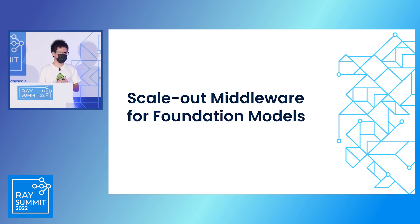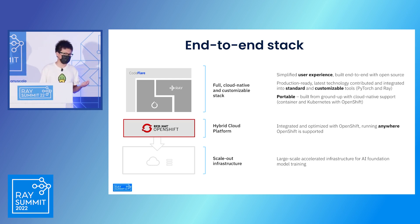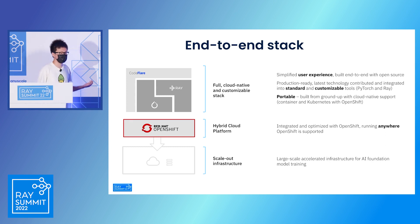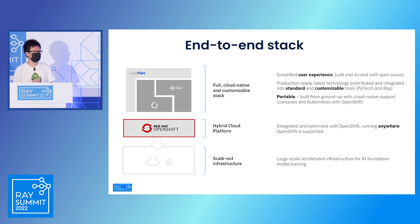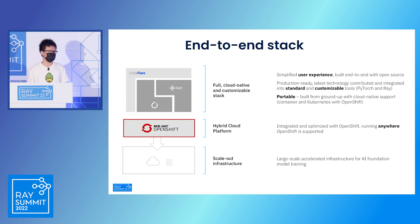One of the major efforts we've been working on is to build what we call scale-out middleware. This is a simplified version of our end-to-end stack for building foundation models. Looking from the bottom up: at the very bottom is our infrastructure — hardware, GPUs, and clusters. Slightly above that is our cloud platform. We've been leveraging Red Hat OpenShift, which is the commercial version of Kubernetes, as our hybrid cloud platform, to enable us to run anything anywhere in a hybrid cloud fashion.